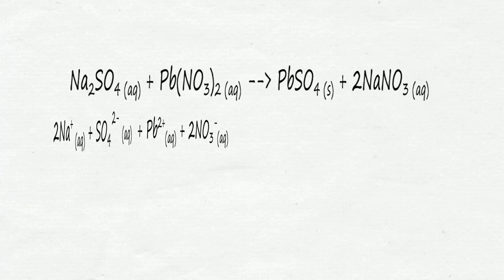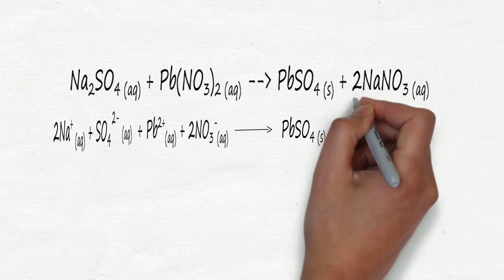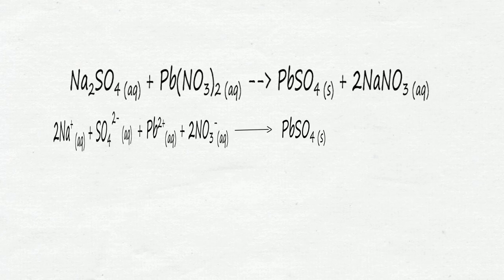Lead 2 sulfate is in solid state. Leave it as it is. There is a 2 in front of sodium nitrate. This means we separate it into 2 sodium ions and 2 nitrate ions.